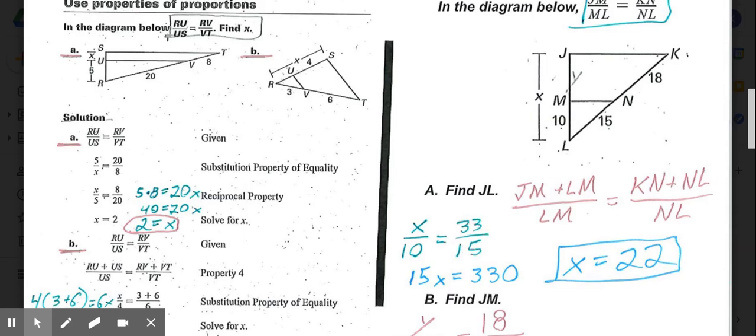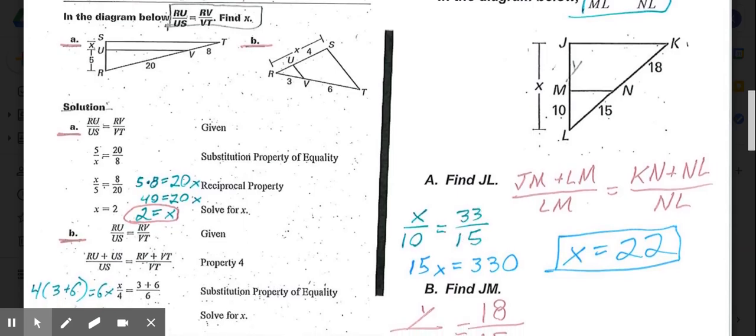Our setup then would be X/10 = 33/15. Then we're going to cross multiply. So 33 times 10 is 330. 15 times X, 15X. Divide both sides by 15, and X equals 22.